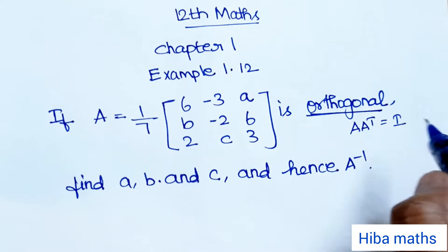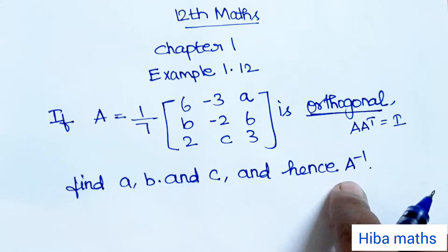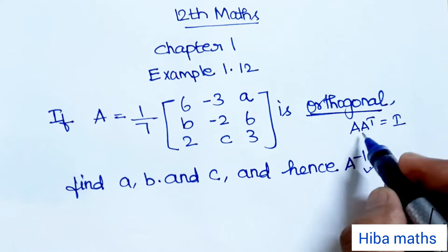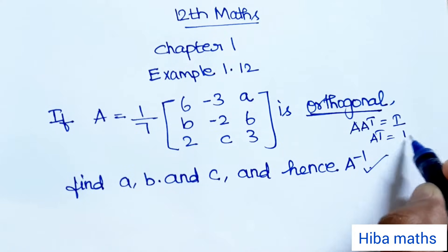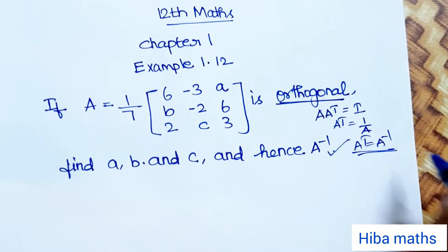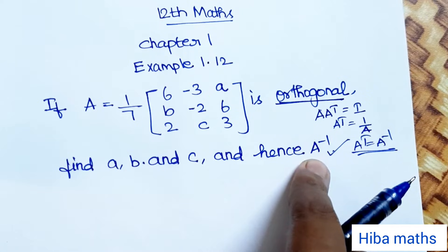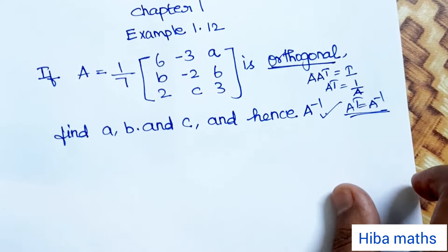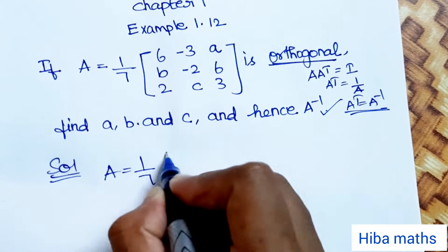We need to find a, b, and c, and hence find A inverse. For an orthogonal matrix, A transpose is equal to A inverse. So A transpose equals A inverse — we will be able to find A inverse using the transpose.